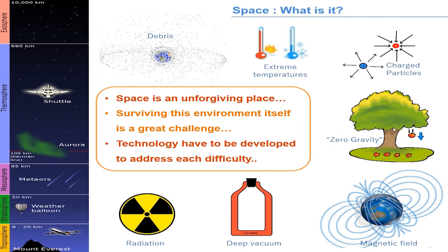Atmosphere acts like a blanket for Earth, protecting us from extreme temperature shifts, deep vacuum, radiations, and charged particles. The magnetic field of Earth is key to protecting us from the solar wind. One of the first challenges in designing a satellite is the vast amount of debris available in space. Satellites cannot be designed to withstand debris hits, but orbits can be chosen to bypass debris fields.